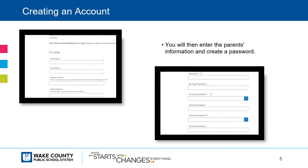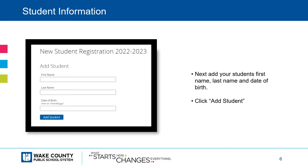To create an account, simply enter the first name, last name, phone number, and email address for the parent or legal guardian, and then create a password. Next, add your student's first name, last name, and date of birth, and then click Add Student. If you have multiple students you would like to register, please do a separate registration for each child.